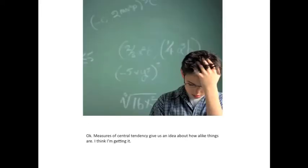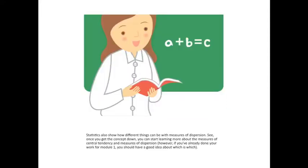So measures of central tendency give us an idea about how alike things are. Maybe I'm getting it. And statistics can also show how different things can be with measures of dispersion. Once you get the concept down, you can start learning more about the measures of central tendency and measures of dispersion.